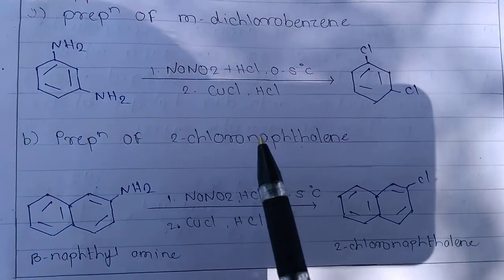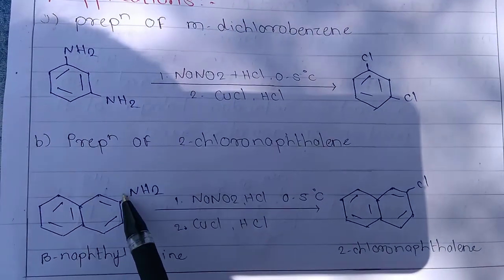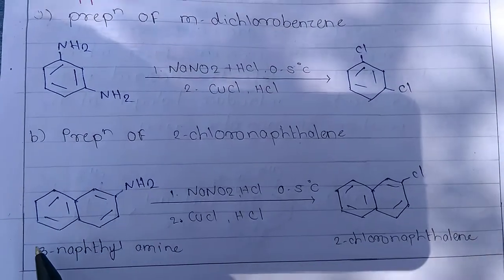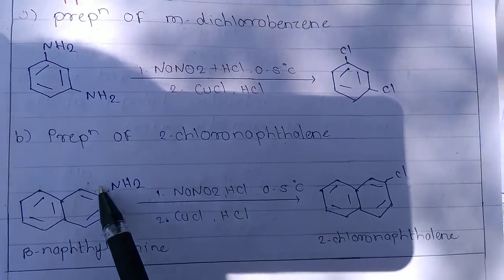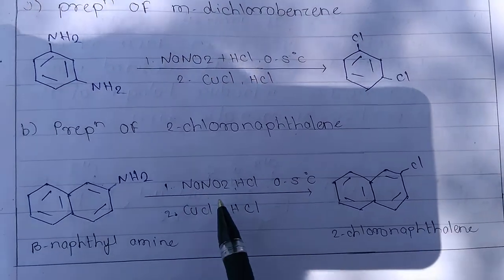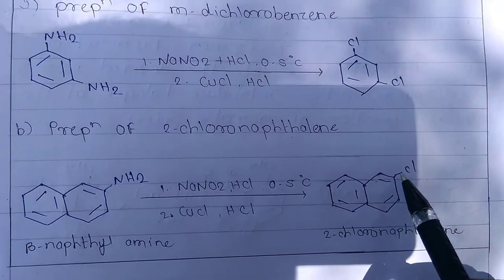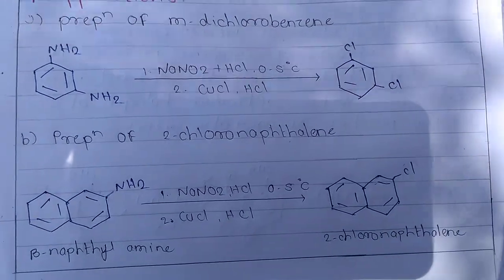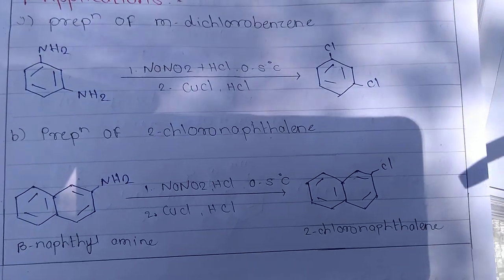The second application is the preparation of 2-chloronaphthalene. In this case, the NH2 group is present at the beta position of naphthalene (beta-naphthylamine). The N2+ Cl- diazonium salt is formed, and after the Sandmeyer reaction, chlorine is introduced at the 2-position, forming 2-chloronaphthalene.